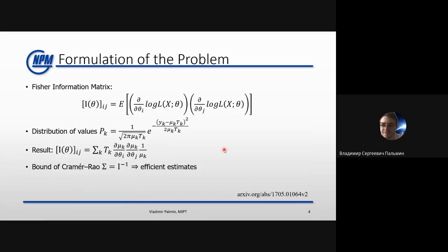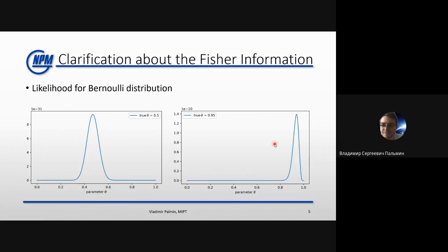Such problems of optimization are usually solved with Fisher information. The areas where it can be used are very different — it can be used in machine learning, in medicine, and even in finance. The definition of Fisher information is shown on the slide, but I should say some words for a clearer understanding.